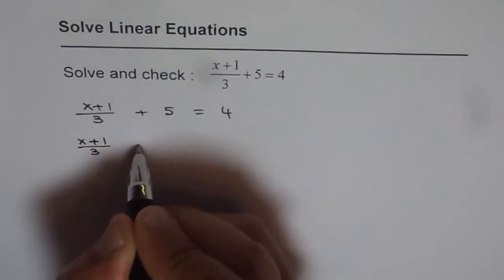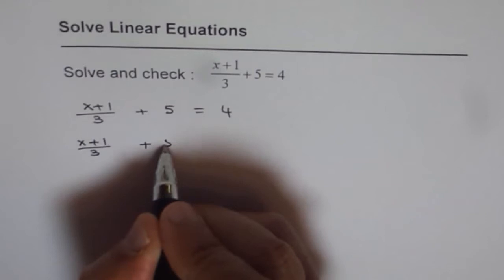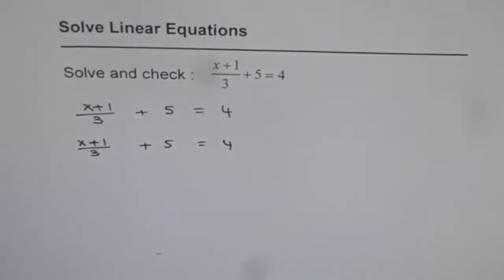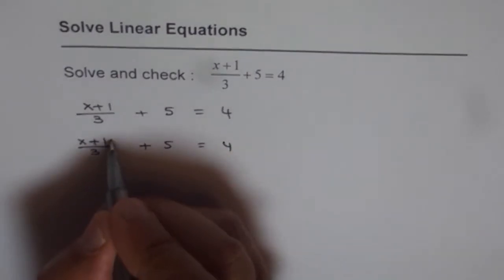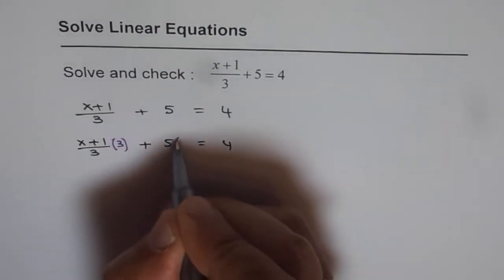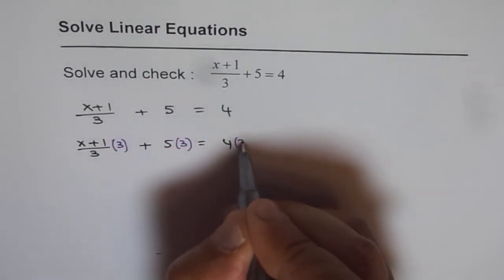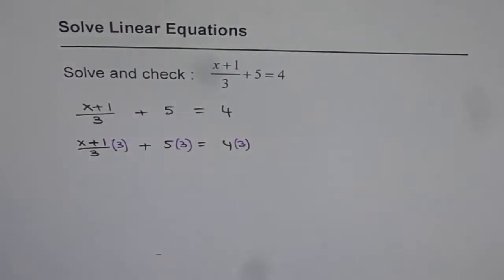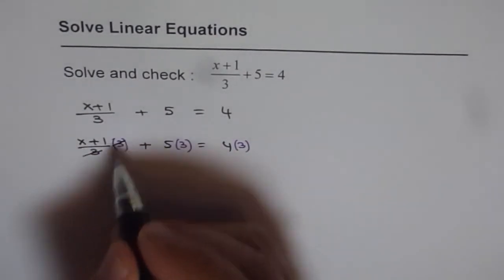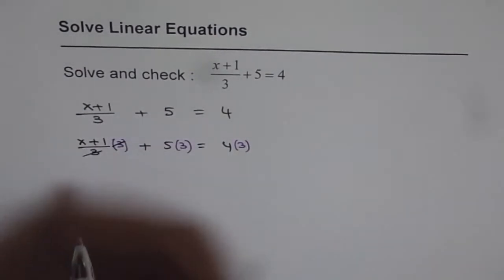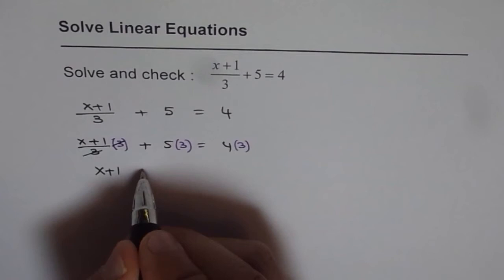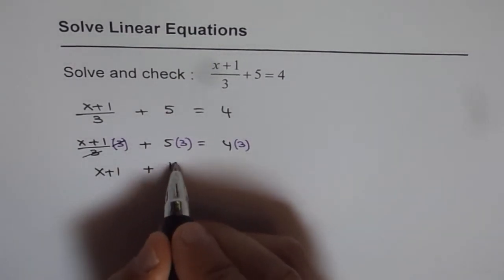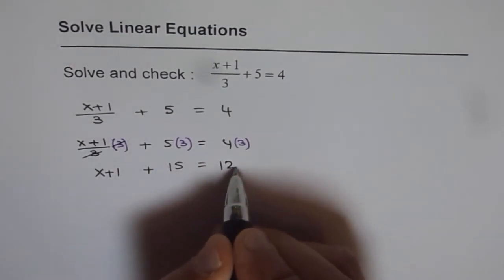We have x plus 1 over 3, plus 5 equals 4. In this step, we're multiplying everything by 3. Once we do that, 3 divided by 3 is 1, so we're left with x plus 1. We get x plus 1 plus 5 times 3 is 15, equals 4 times 3 is 12.